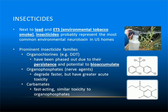Prominent insecticide families are defined by molecular composition and action of insect destruction. These include organochlorines, organophosphates, and carbamates. Organochlorines are insecticides composed primarily of carbon, hydrogen, and chlorine. They break down slowly and can remain in the environment long after application and in organisms long after exposure. The most notorious organochlorine is DDT. Organochlorine insecticides have been phased out due to their persistence in the environment. Organophosphates are organic compounds that contain carbon-phosphorus bonds. They were first discovered as potential insecticides in the 1930s and were then used as nerve gas during World War II. These compounds degrade faster but have greater acute toxicity than organochlorines.